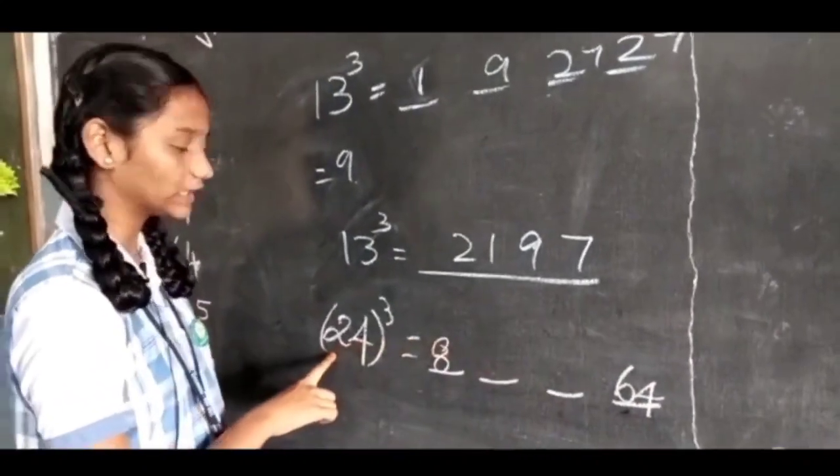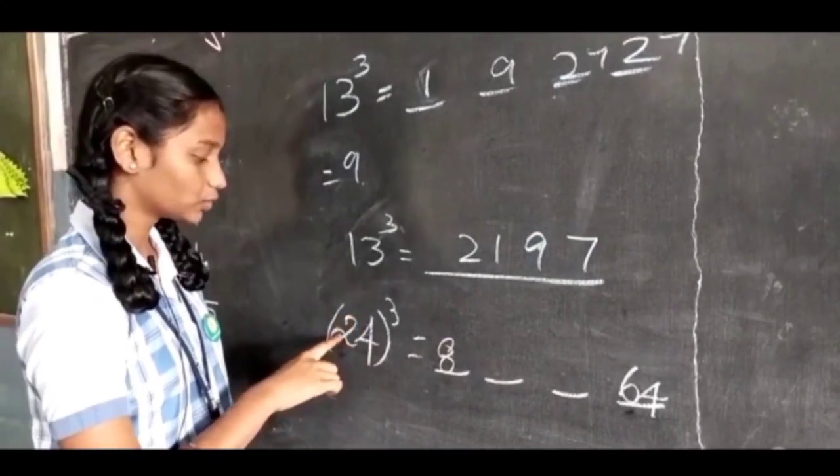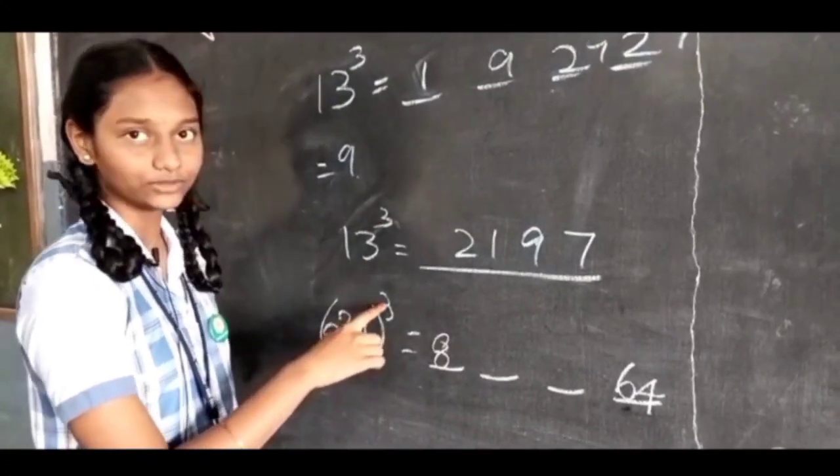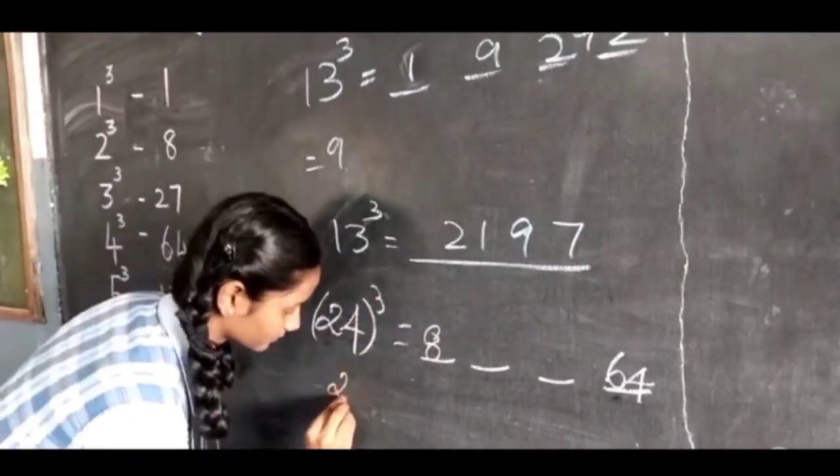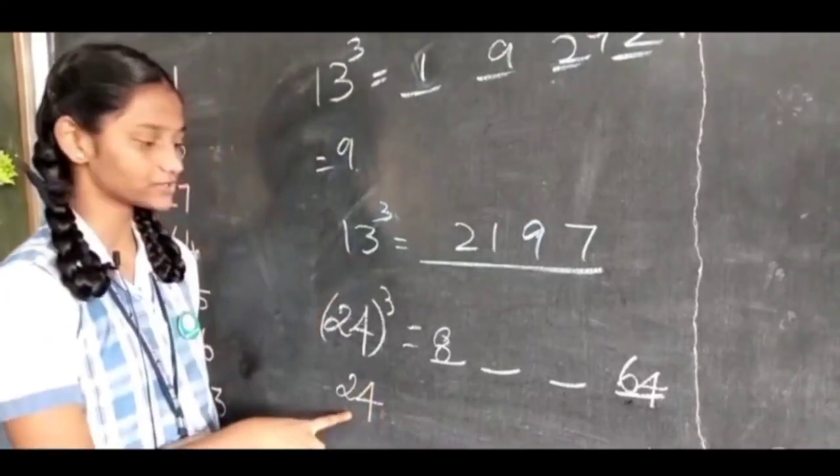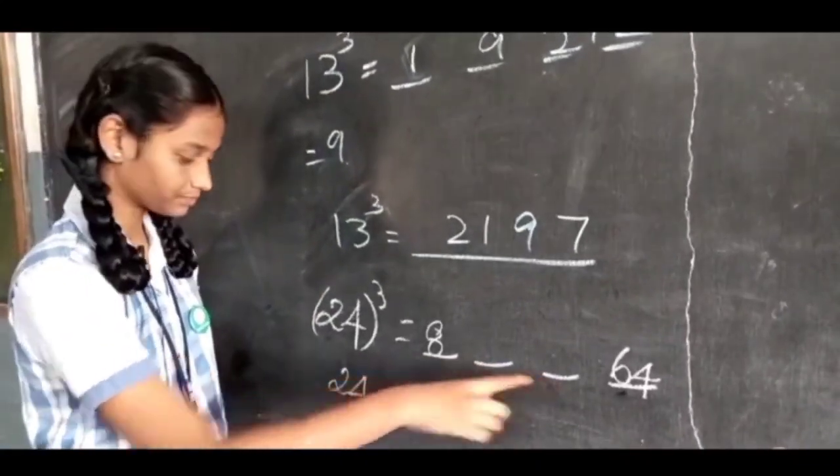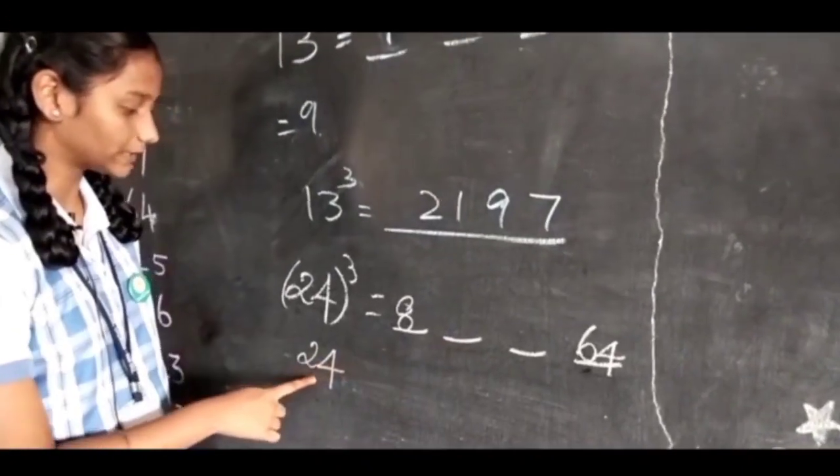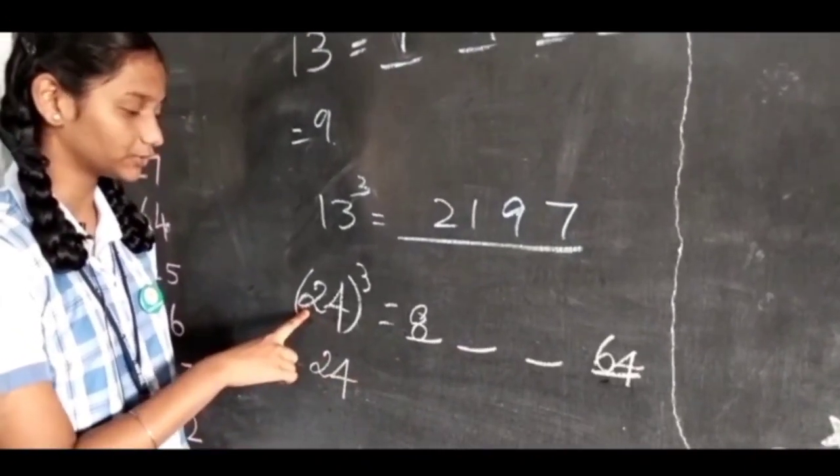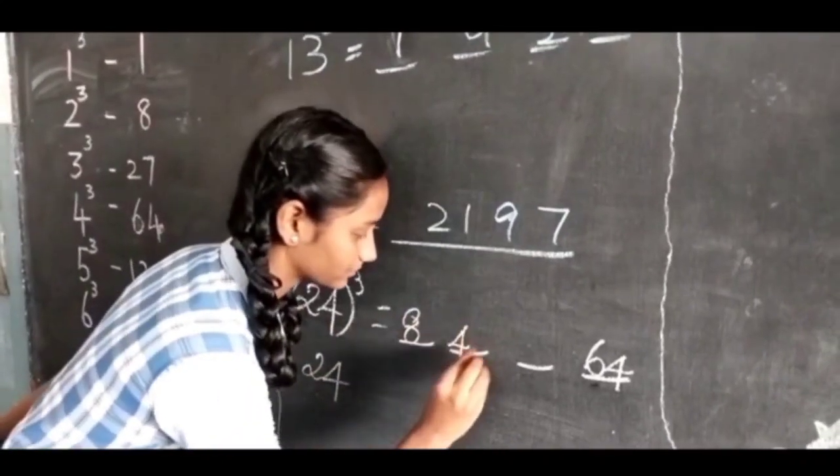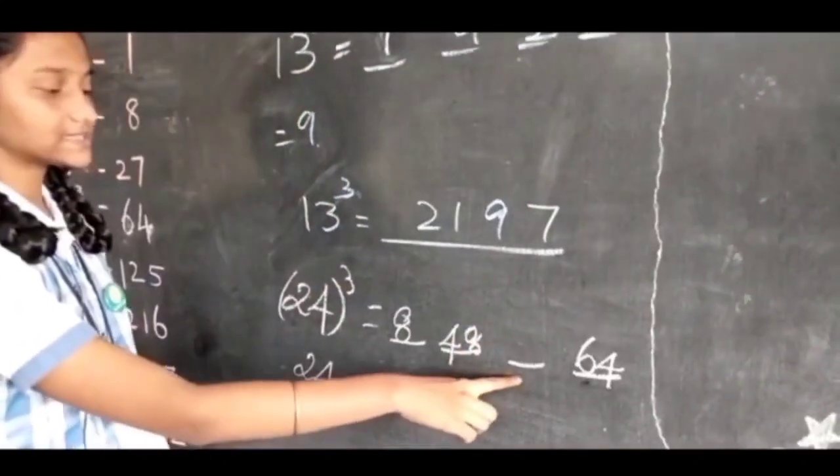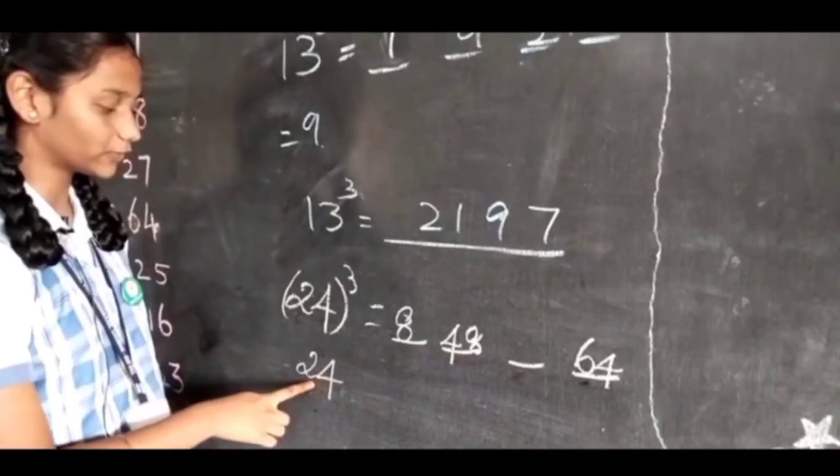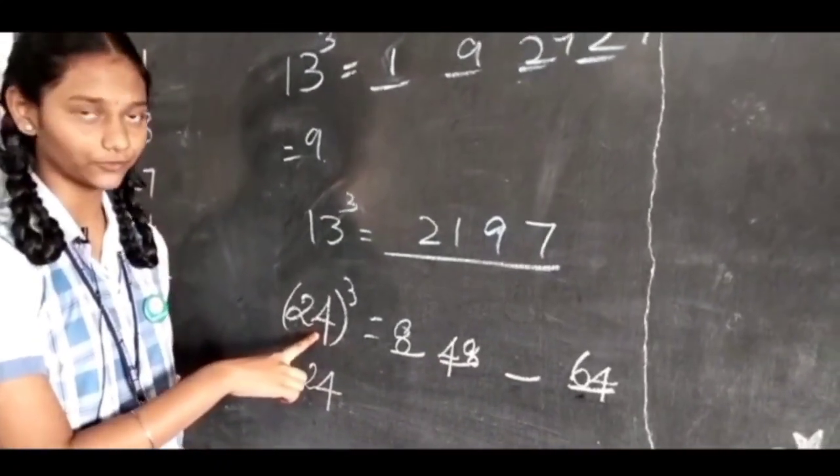In order to find the middle two parts, we must multiply all the numbers. 2 into 4 is 8, and 8 into 3 is 24. This 24 is common for both the middle terms. To find the first middle term, we multiply 24 with the first term - that is, 24 into 2 is 48. To find the second middle part, we multiply 24 with 4 - that is, 24 into 4 is 96.